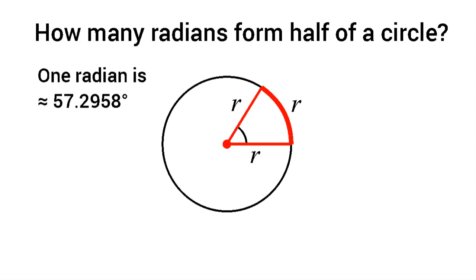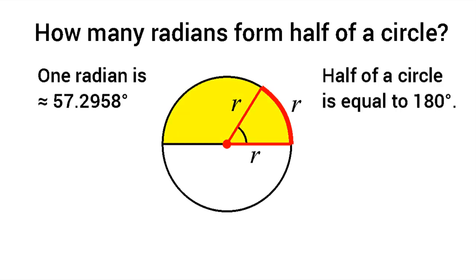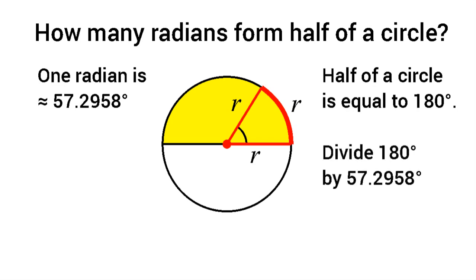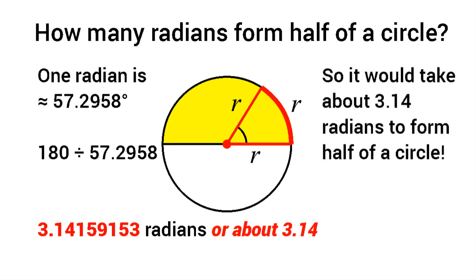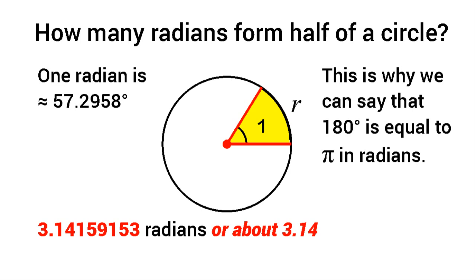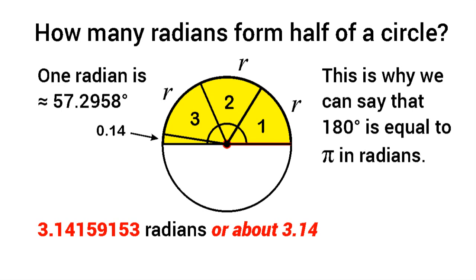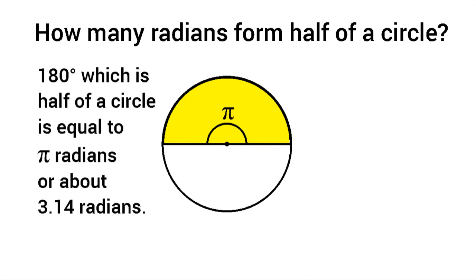What if we wanted to figure out how many radians it takes to form half of a circle? We know half a circle equals 180 degrees. Dividing 180 by 57.2958 tells us how many radians fit inside half a circle. We can fit one, two, three radians and a little bit more — about 0.14 of a radian — giving us a total of pi. So 180 degrees equals one pi in radians.